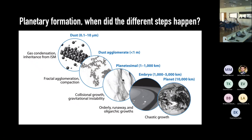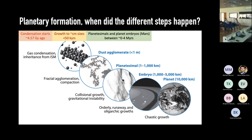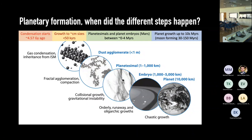Going back to our planet formation sketch: from radiometric measurements of CAIs, we know condensation started about 4.57 billion years ago. Growth to centimeter-sized objects happened in less than 50,000 years, and formation of planetesimals and even planetary embryos took less than 4 million years. From measurements in planetary mantles and lunar rocks, accretion to planet-sized objects took another few tens of millions of years. The Moon-forming event — one of the last big steps of accretion for our planet — was dated somewhere between 30 and 150 million years after CAI formation, though it's quite uncertain in the literature.